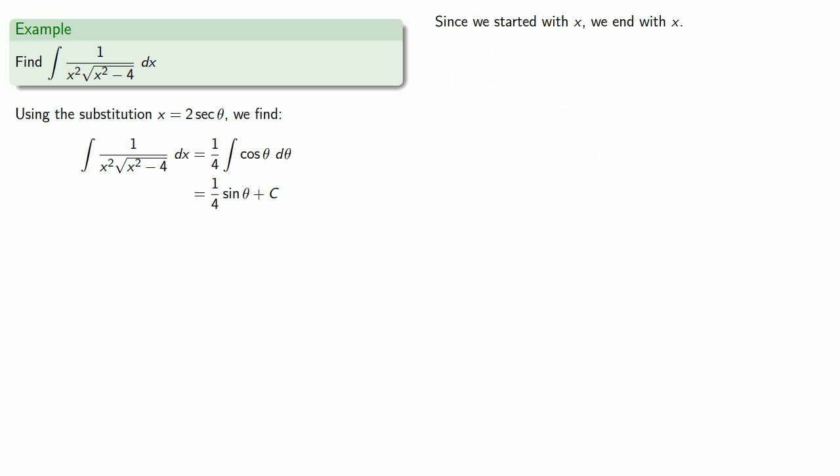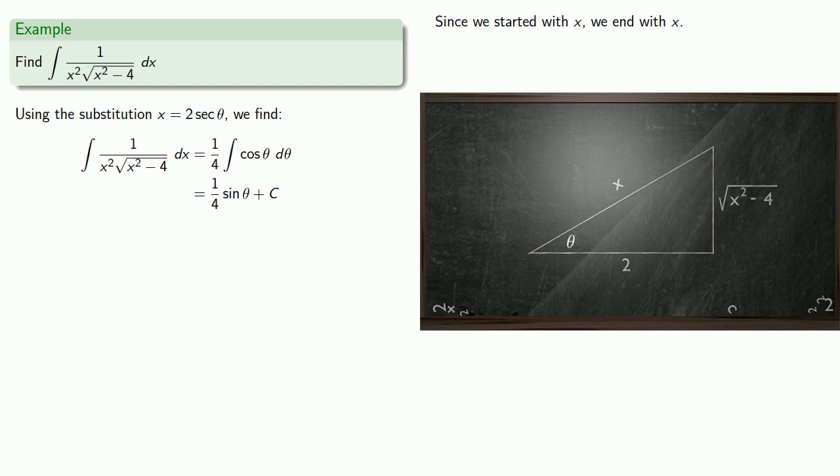Since we started in x, we end in x. We'll pull up our picture, and from our picture we see that sine of theta is opposite over hypotenuse. Making that final substitution gives us our answer for the indefinite integral.